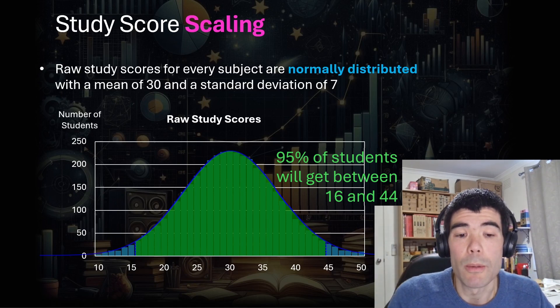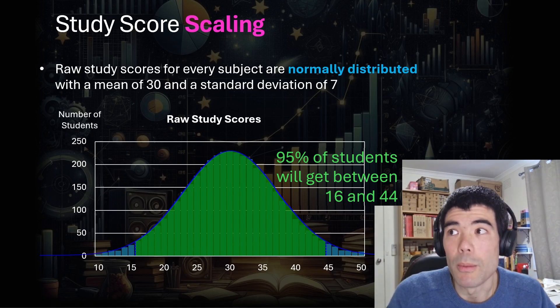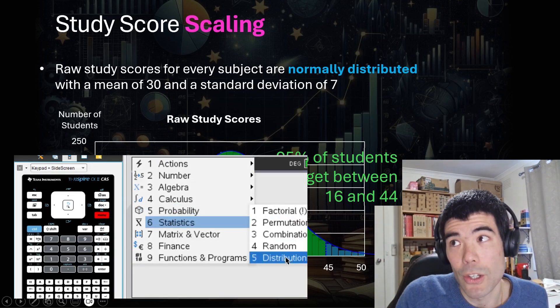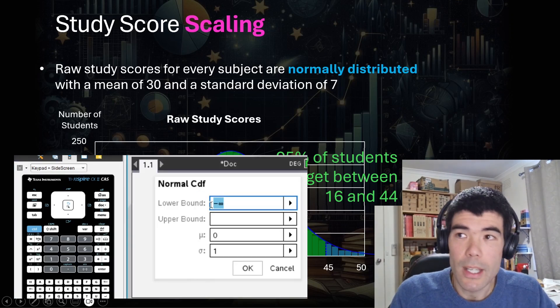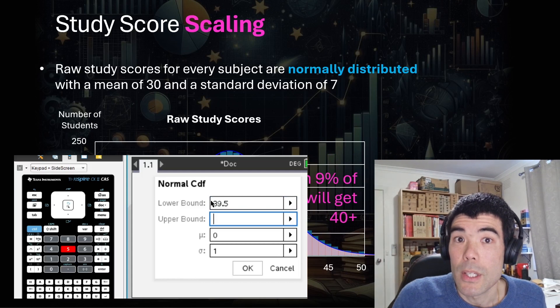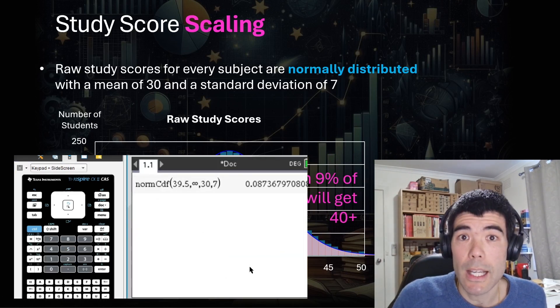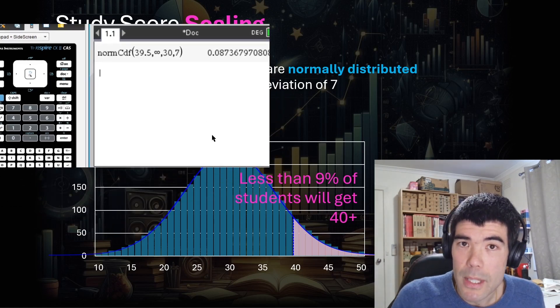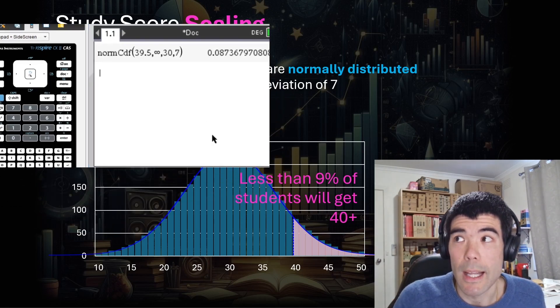If you study maths methods, you can go a little bit further and actually calculate any probability for the normal distribution using the normal CDF function on your CAS calculator. So you can calculate that for example, to get above 40, you need to be within the top 9% of students. That is to get a raw 40 in any subject, you need to be in the top 9% of students who are sitting that subject.